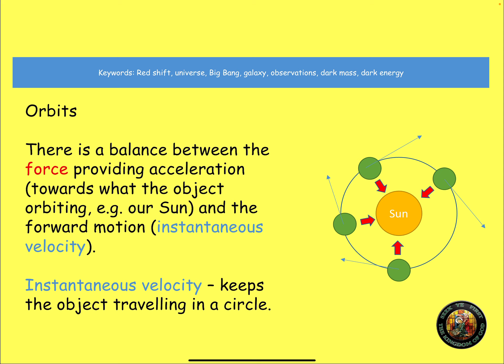Remember, if an object is in a circular orbit, then it is said to be accelerating. Even though it's travelling at the same speed, it's accelerating because it is constantly changing direction. There is a balance between the force providing the acceleration, that's towards the object orbiting, e.g. our sun, and the forward motion, which is called the instantaneous velocity. And that keeps the objects travelling in a circle, the instantaneous velocity.